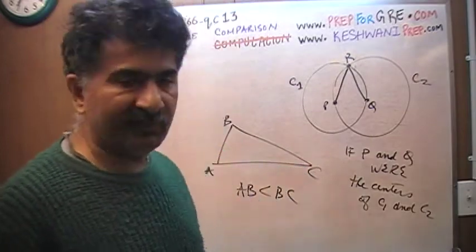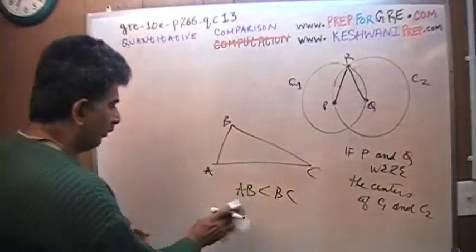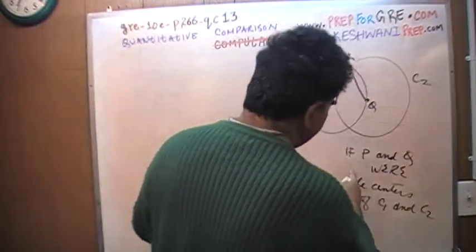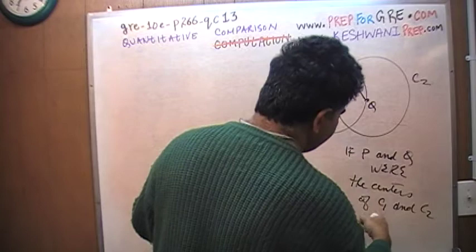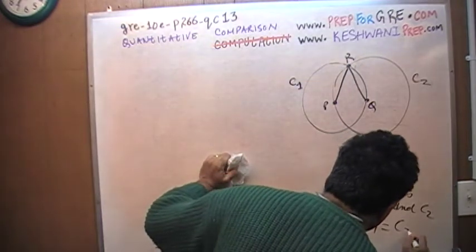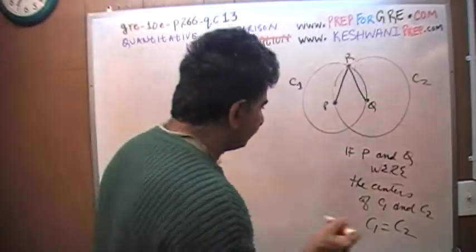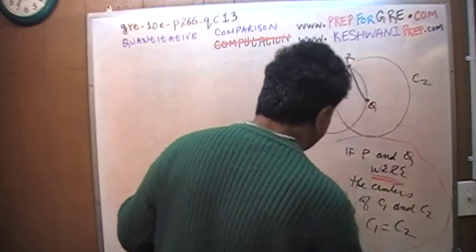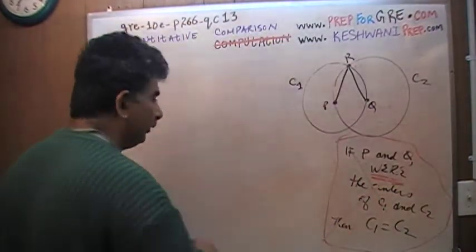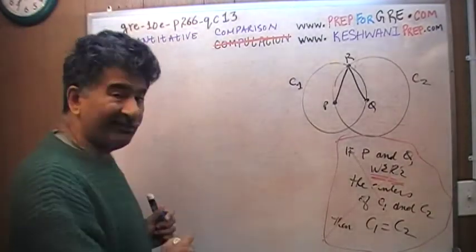But we are not told that P and Q are the centers. So for all I know, for all we know, if P and Q were the centers of C1 and C2, then C1 would have been equal to C2. But that is not the case, we are not told that. So for all I know, the situation that we have at hand could be something like this. What you have to do is exaggerate the things.